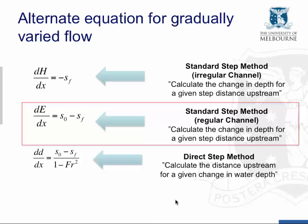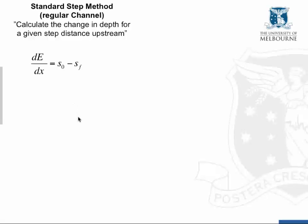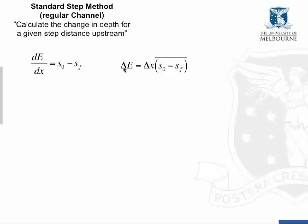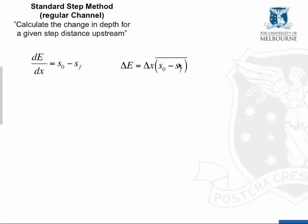Now let's look at the standard step method for a regular channel, which is based on the specific energy gradient. In this approach, we're calculating the change in depth for a given step distance upstream. We can rewrite this as: the change in specific energy Delta E equals some distance Delta X times the average of the bed gradient minus the energy gradient, averaged over that distance Delta X.